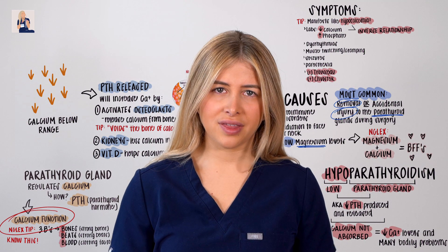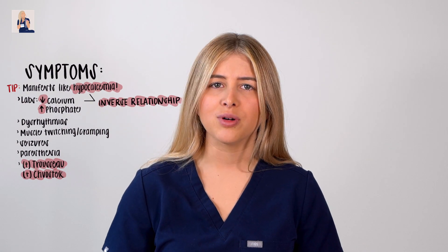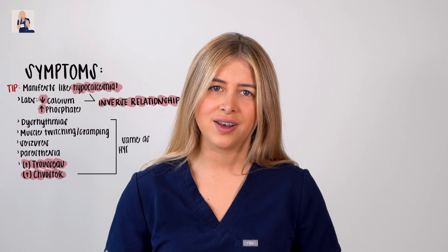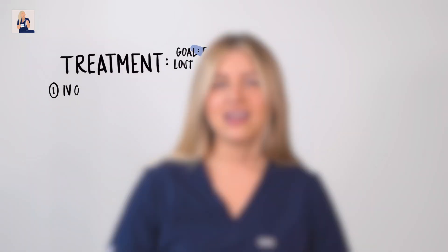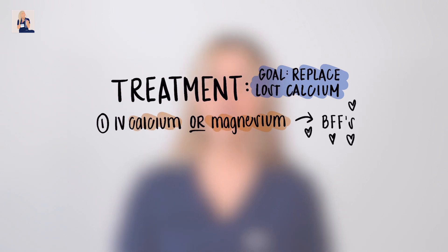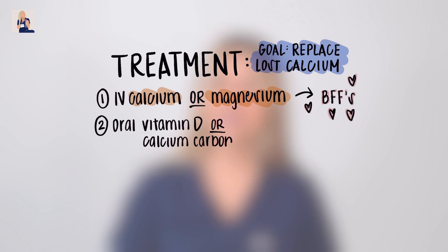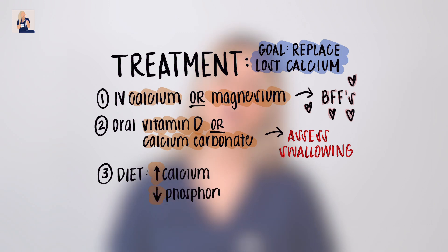We have hypoparathyroidism — now how do we treat it? The whole problem is that our parathyroid is unable to carry out its normal function, causing hypocalcemia. Our main goal is to simply replace what we're missing, and that is calcium. We give IV calcium or magnesium — remember they are BFFs. We can also give oral vitamin D or calcium carbonate tablets if the patient is able to swallow, and we encourage a diet high in calcium and low in phosphorus, remembering the inverse relationship between the two.